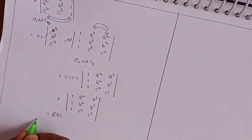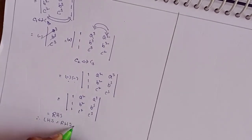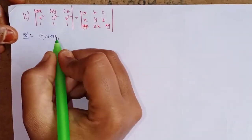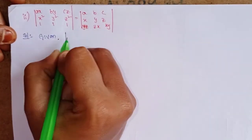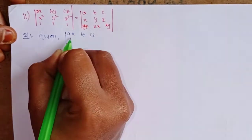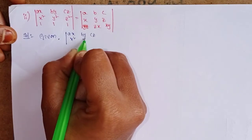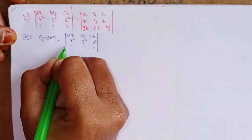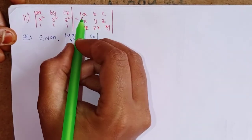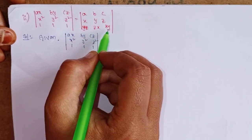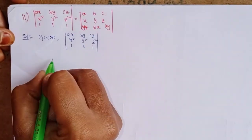Next, question number 2: determinant of [ax, by, cz; x², y², z²; 1, 1, 1] — prove this equals determinant of [a, b, c; x, y, z; yz, zx, xy].